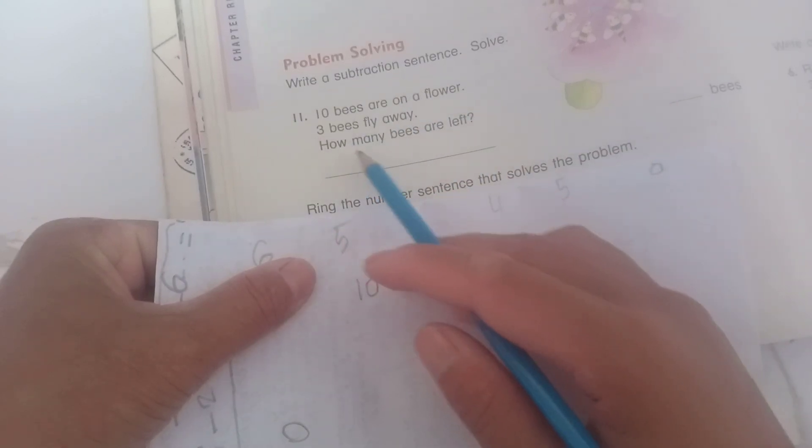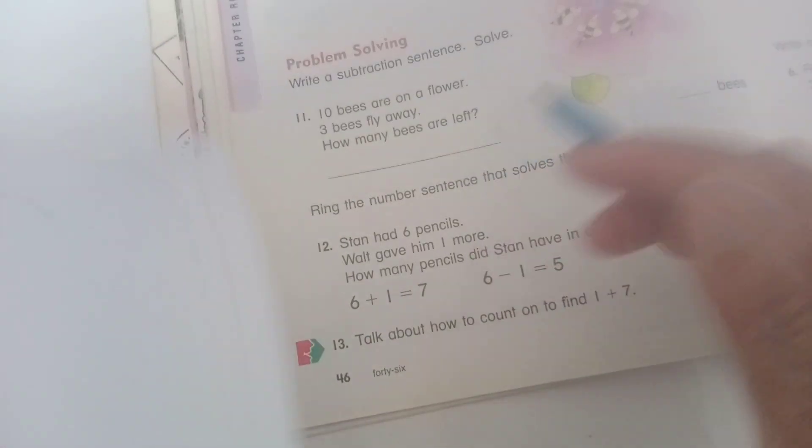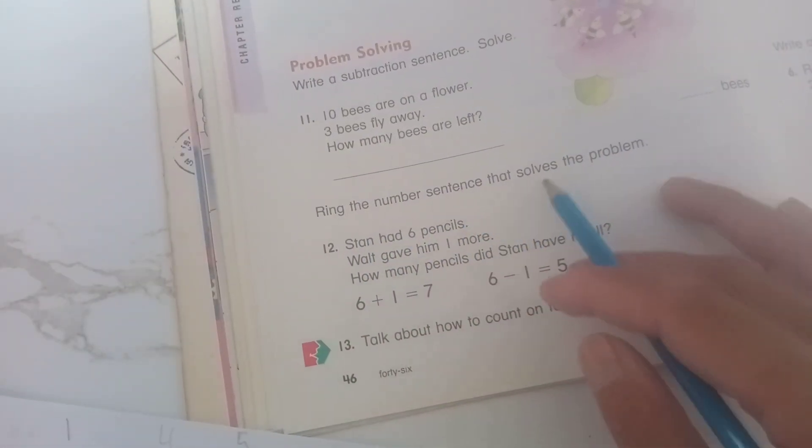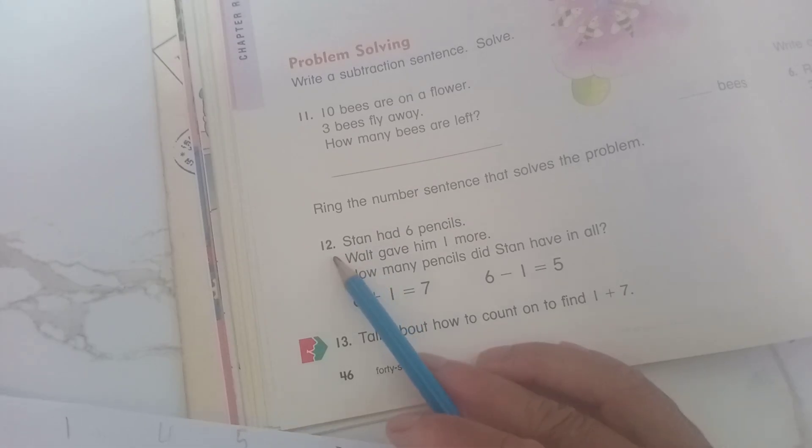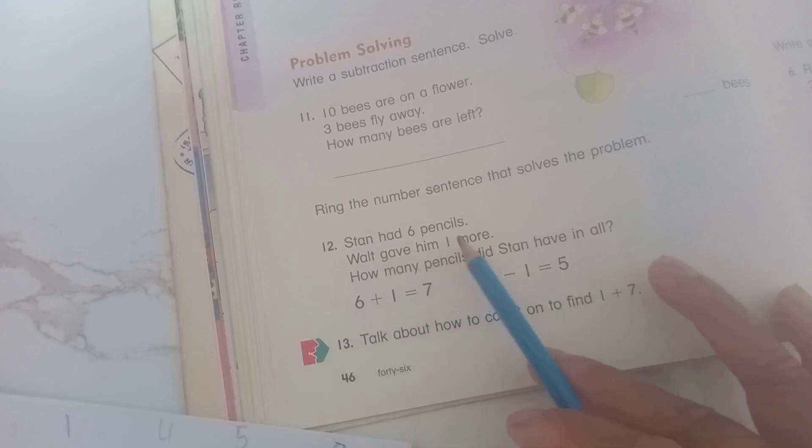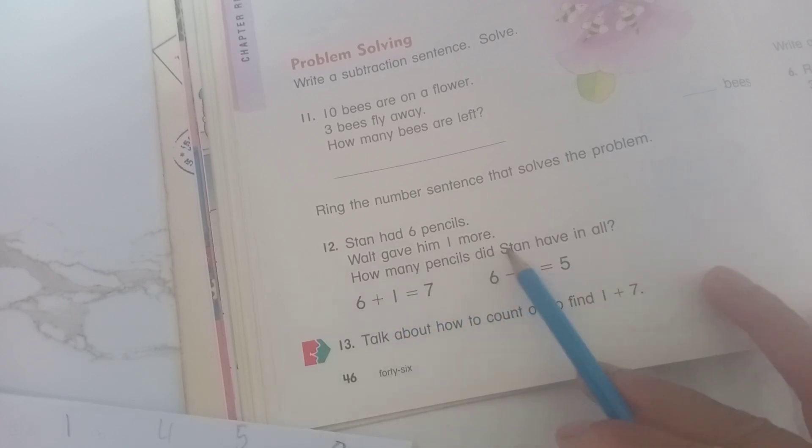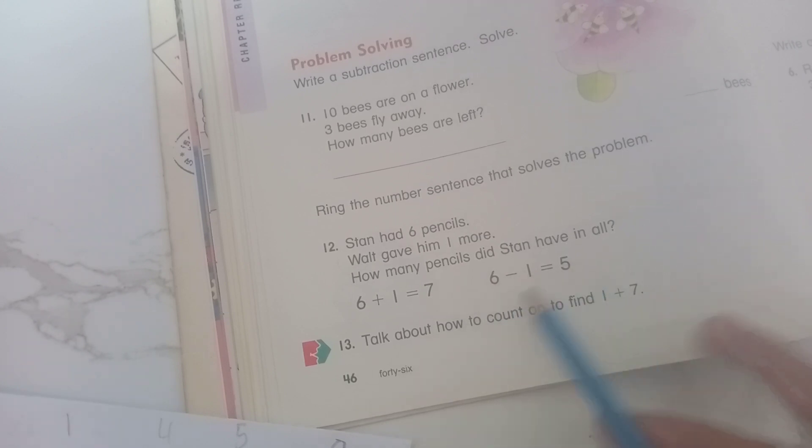Write the number sentence that solves the problem. Problem 12: Stan had six pencils. Walt gave him one more. How many pencils does Stan have in all? Six plus one equals seven. And the difference: six minus one equals five.